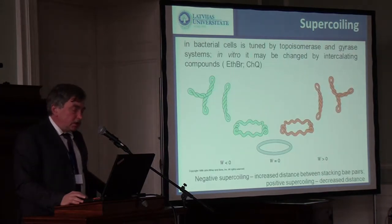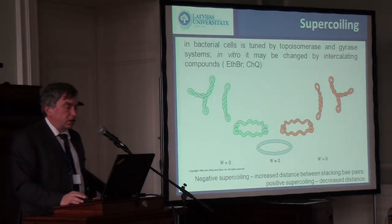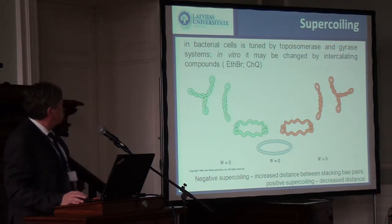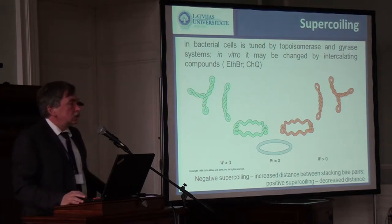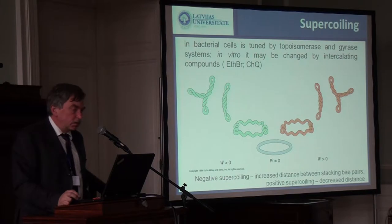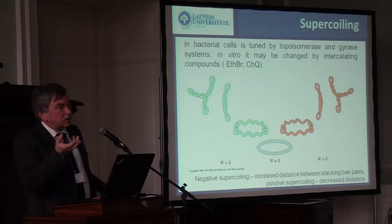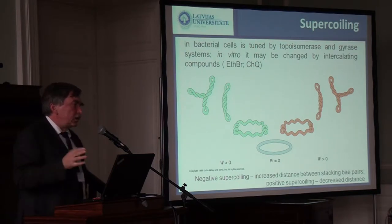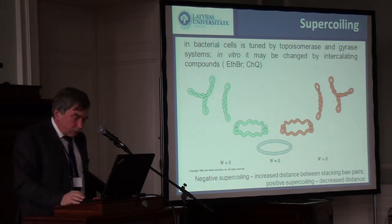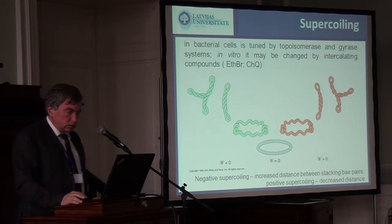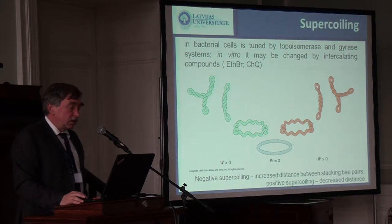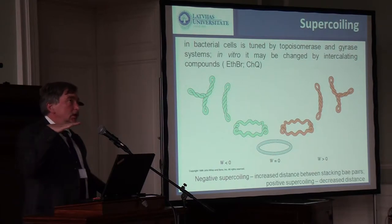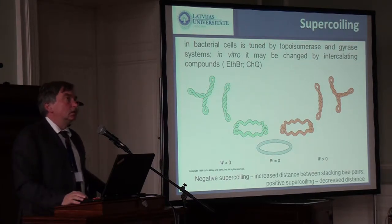Supercoiling can be changed during the cultivation of bacterial cells. Two enzyme systems in bacteria — topoisomerases and gyrases — play a very important role. It can also be changed in vitro by adding intercalating agents to the plasmid molecules. Supercoils can be called negative and positive, and can be turned from negative to positive depending on how many intercalating agents we add. The most popular intercalators are ethidium bromide and chloroquine — specific planar molecules that insert themselves between nucleotide base pair planes in the DNA molecule.